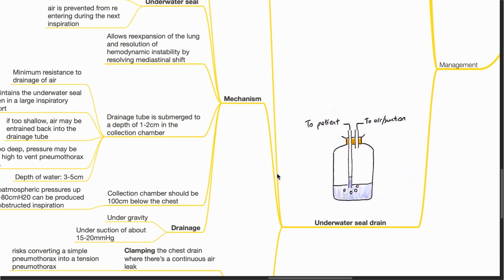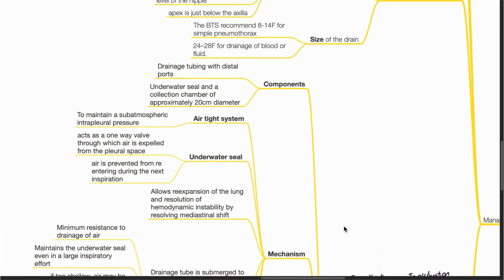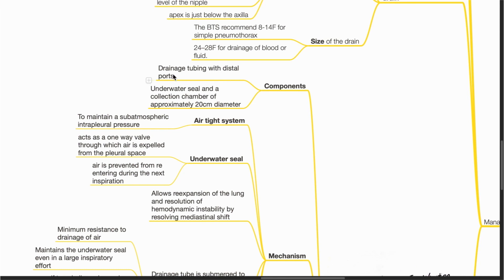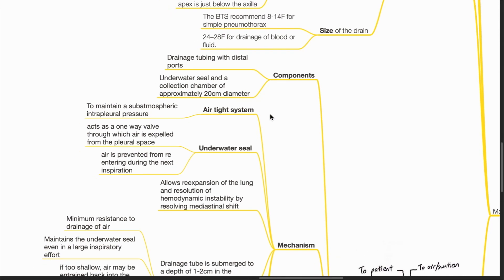An underwater seal drain component includes a drainage tubing with distal ports, underwater seal, and a collection chamber of approximately 20 cm in diameter. It is an airtight system which maintains a subatmospheric intrapleural pressure.